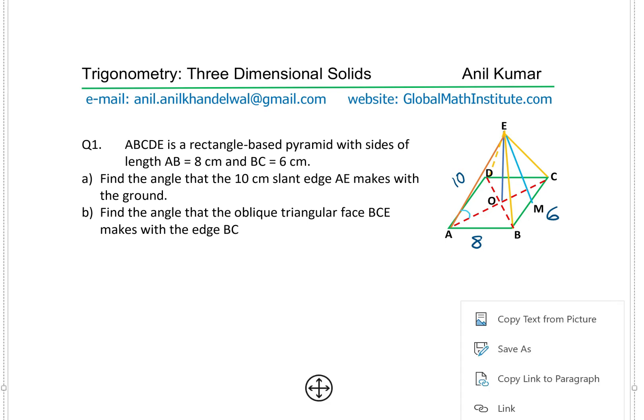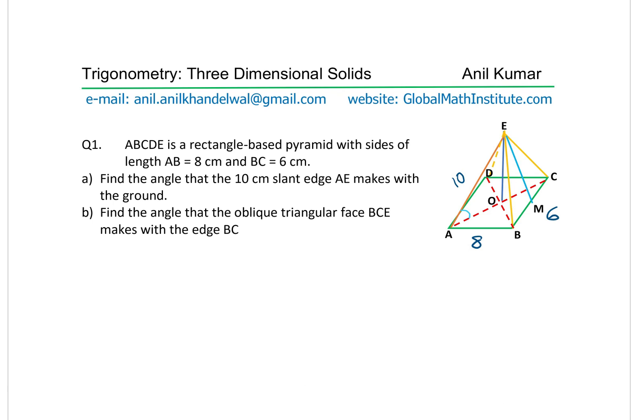For part B, we need to find the angle that the oblique triangular face BCE makes with the edge BC. To find this angle, we connect the midpoint of BC to the center O, and the angle formed there is the angle we need to figure out.